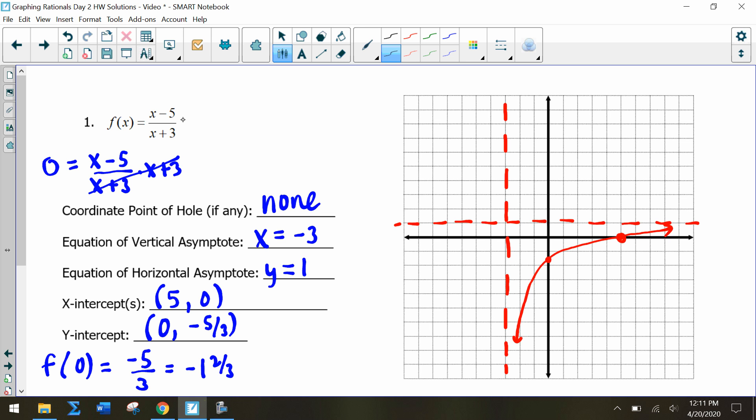we have (x - 5) in our numerator, so why not do negative one, two, three, four, five? Let's plug in x = -5.